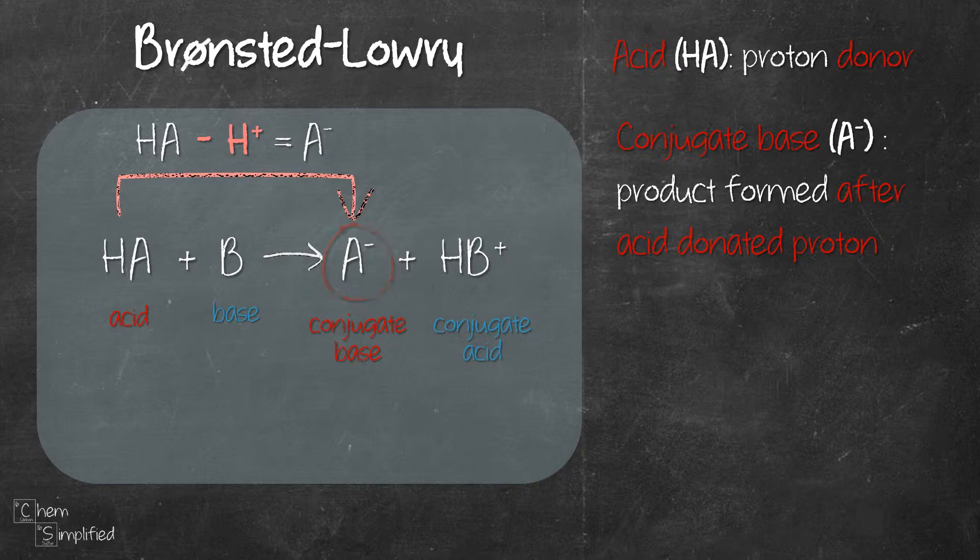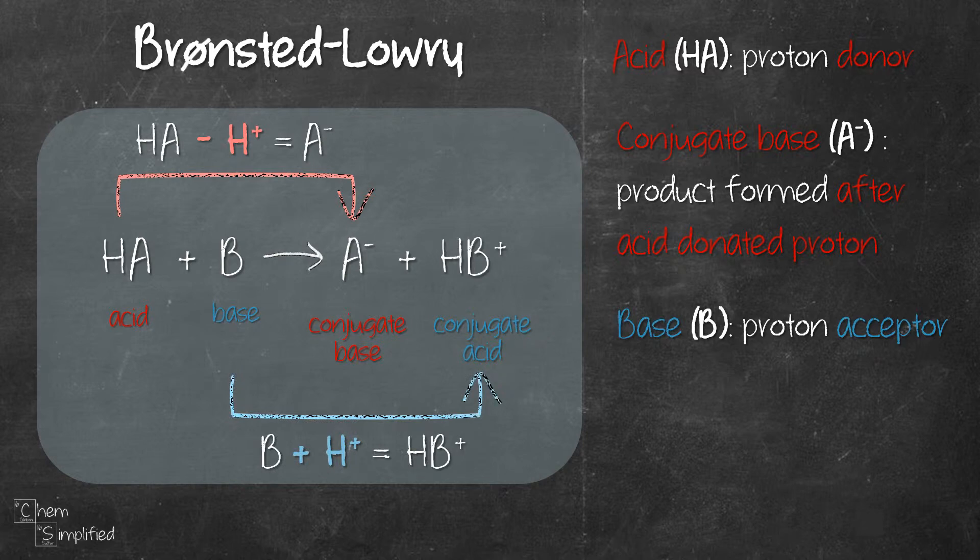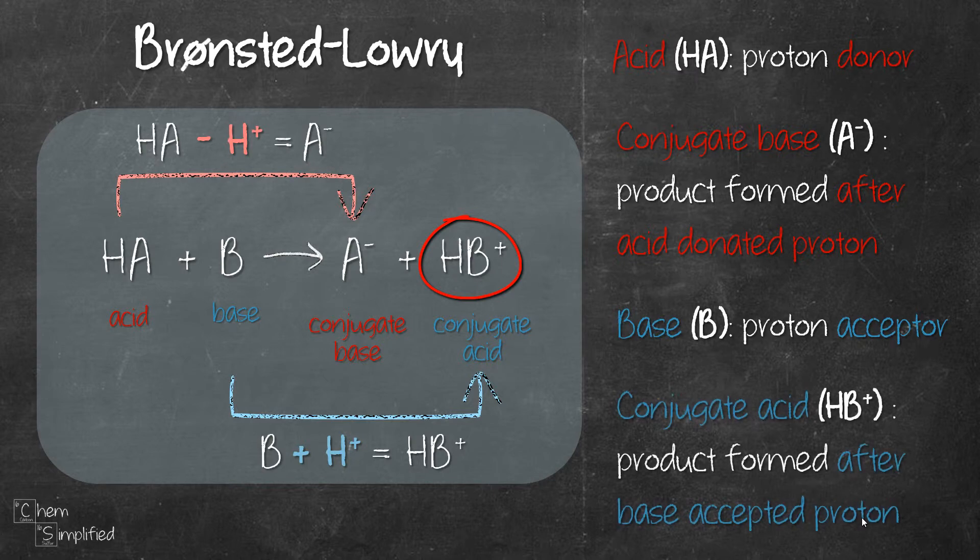Now, let's look at our base B. Since it's a base, that means it will accept proton. Remember that HA donated its proton to become A minus? That proton is accepted by B and then it becomes HB plus. That is the product that we get when base accepts proton and we call that conjugate acid. So B and HB plus is the base and conjugate acid pair.